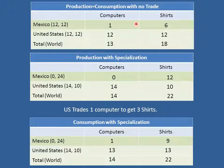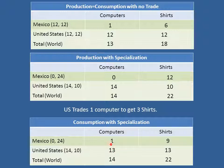Here again is consumption with no trade, and here is production with specialization. Now suppose that the United States trades one computer to get three shirts. There are other possible trades which make both countries better off, but this is a nice, simple one. The United States trades one computer — remember, it produced 14 — it trades one computer to Mexico, so the United States now has 13 and gives one to Mexico, so Mexico has one. In return for three shirts, the United States used to have 10 shirts and now it gets 13. Those extra three shirts come from Mexico, which produced 12, but now Mexico only consumes nine.